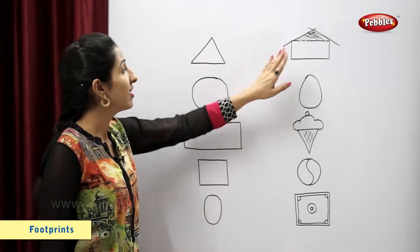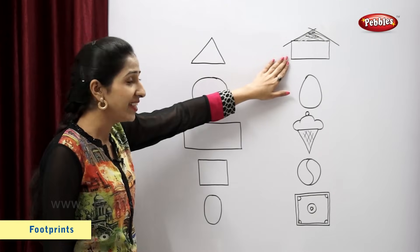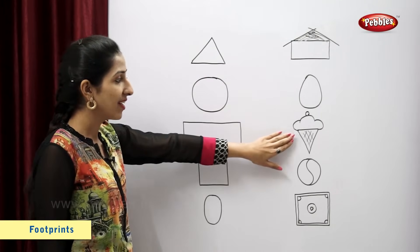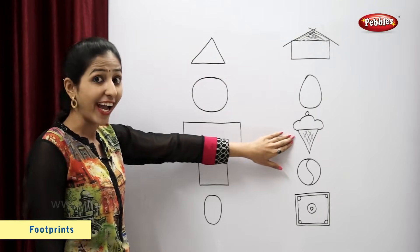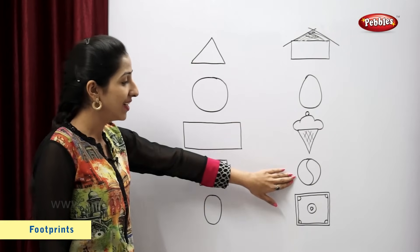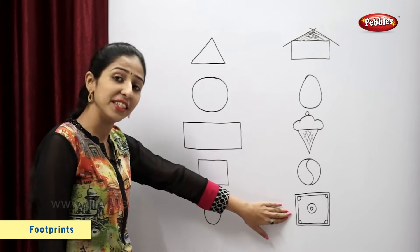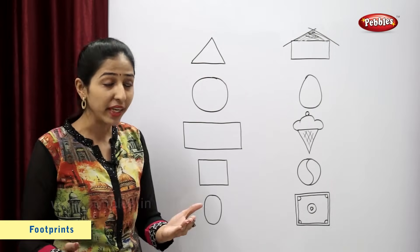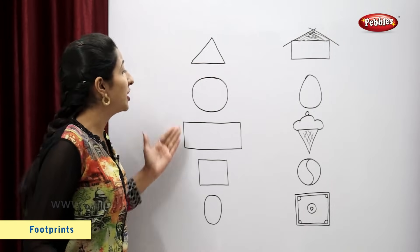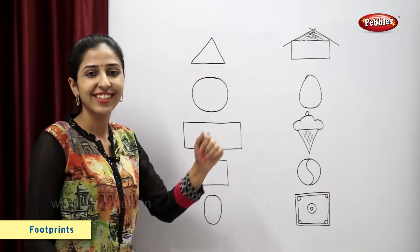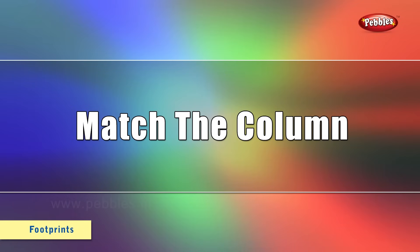Figures are hut, egg, ice cream, ball and the carom board. Now, help me to match shapes and figures. Match the columns.